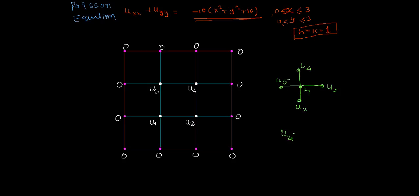The standard five-point formula tells me that u4 plus u5 plus u3 plus u2 minus 4u1 equals the function f. Let's say this point is (x,y), so f(x,y).